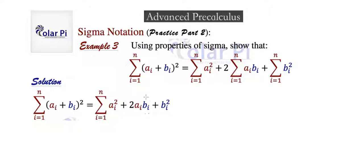Once you do it correctly, you should get this. Now one property of sigma tells us that these three terms here can be given their own individual sigmas.